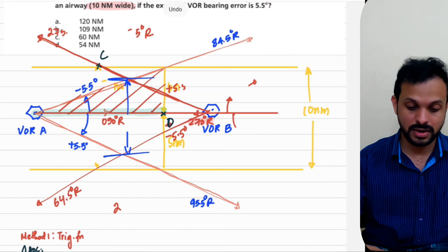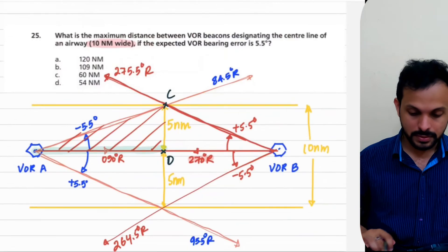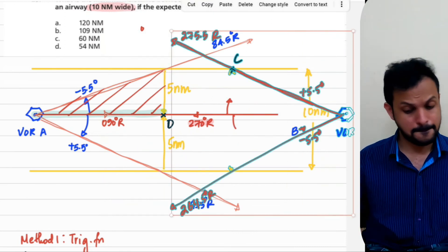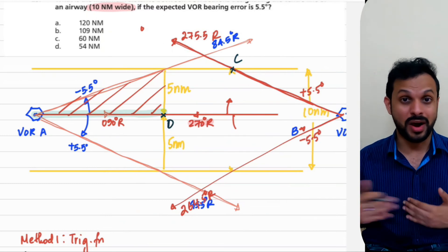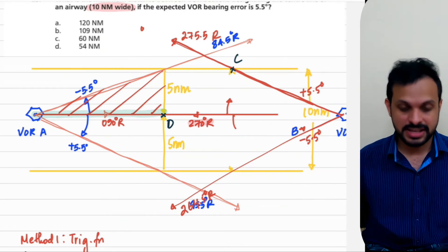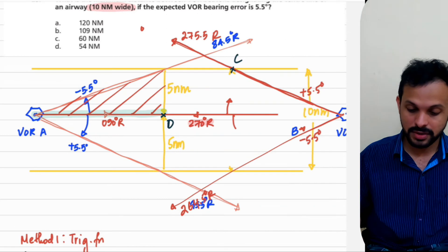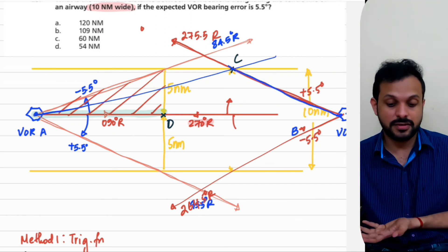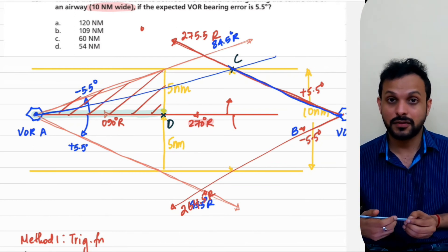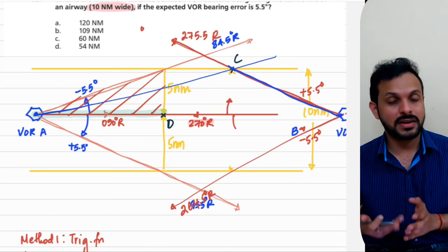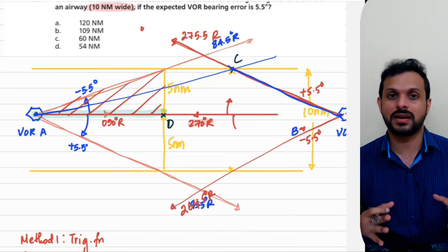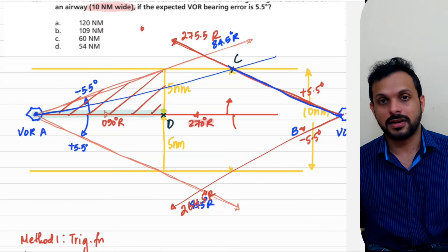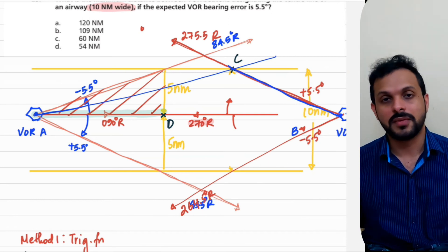Looking at the other scenario: if the VORs are moved further apart, they define a wider airway. To bring the airway back to the standard 10 nautical miles, you'd shift the radials, and the error would reduce below 5.5 degrees. However, we have a standard recommended maximum error of 5.5 degrees, so you must stay within that limit for aircraft to navigate at ease. Therefore, keeping 5.5 degrees as the permissible error, you cannot have a 10 nautical mile airway if the VORs are any further apart than 104 nautical miles either.